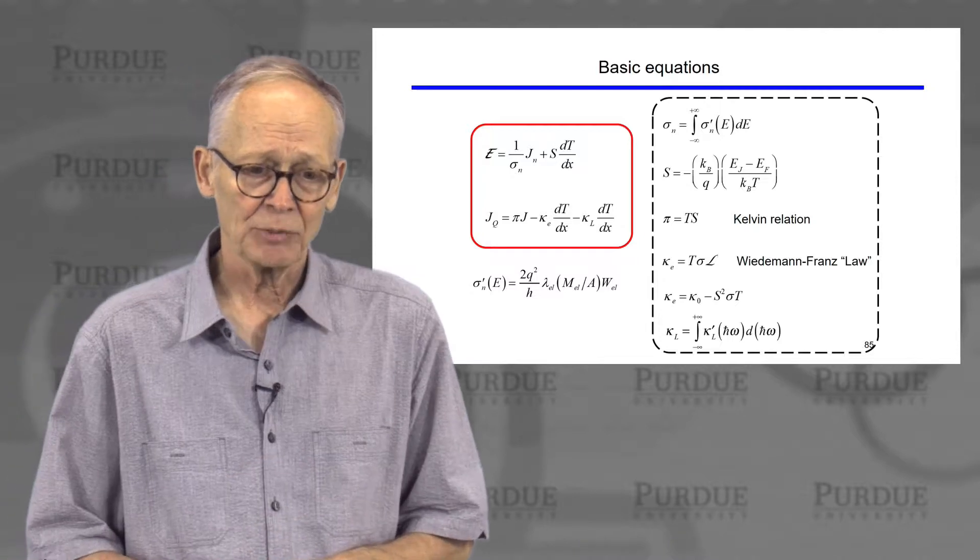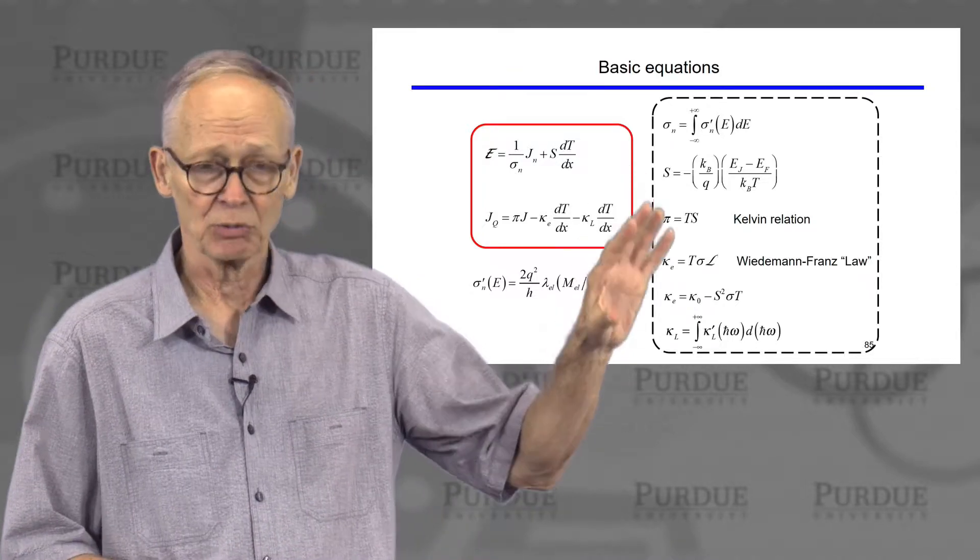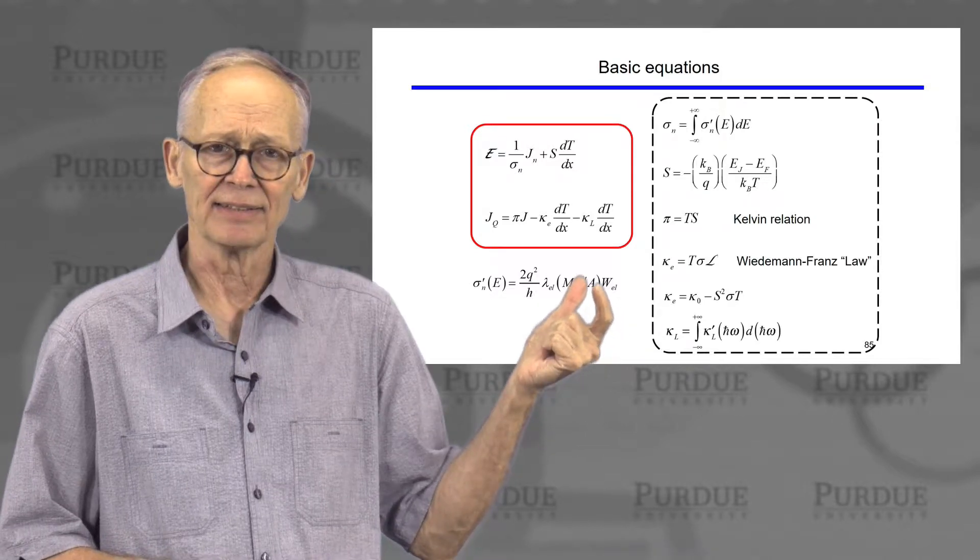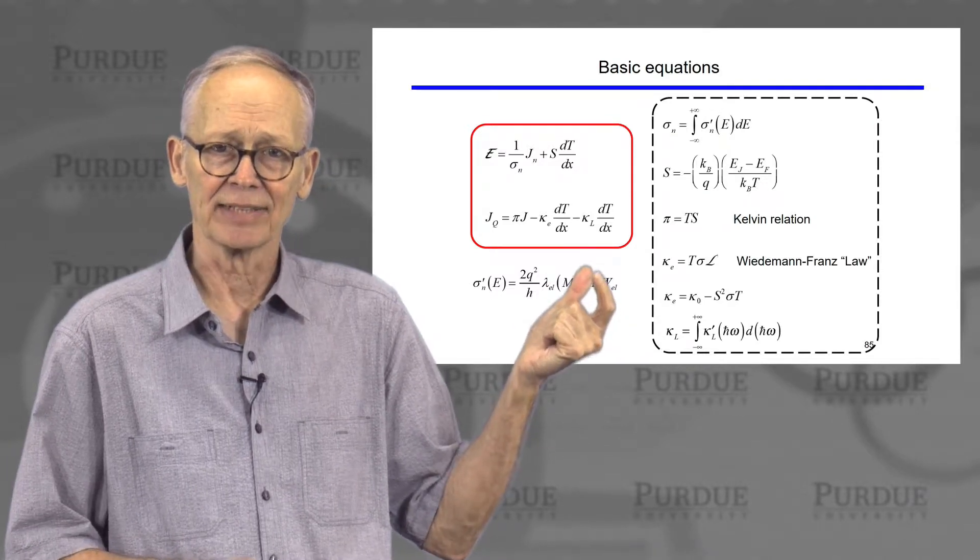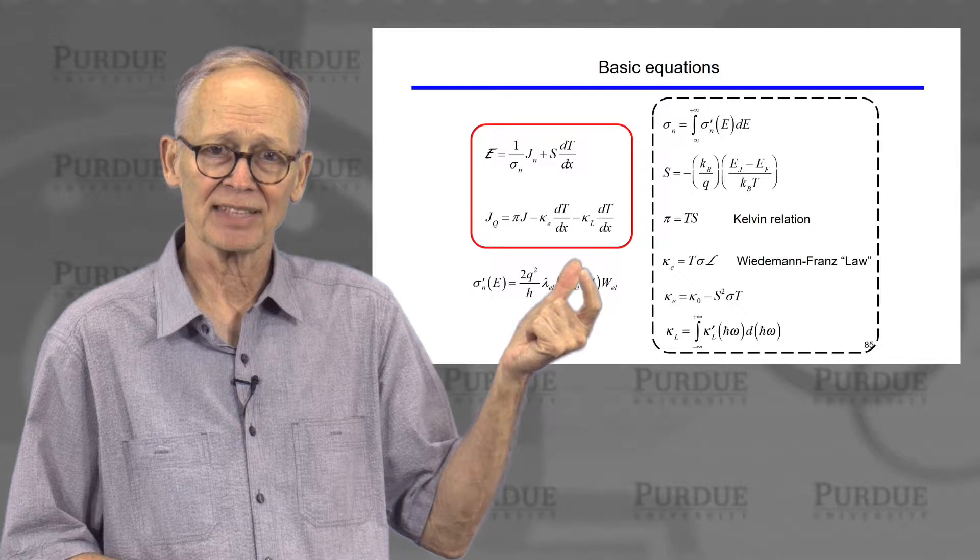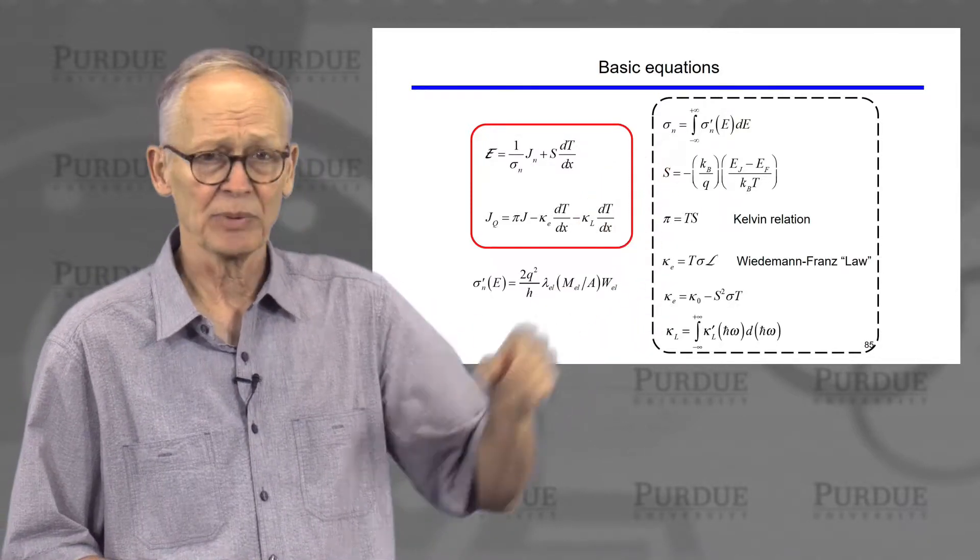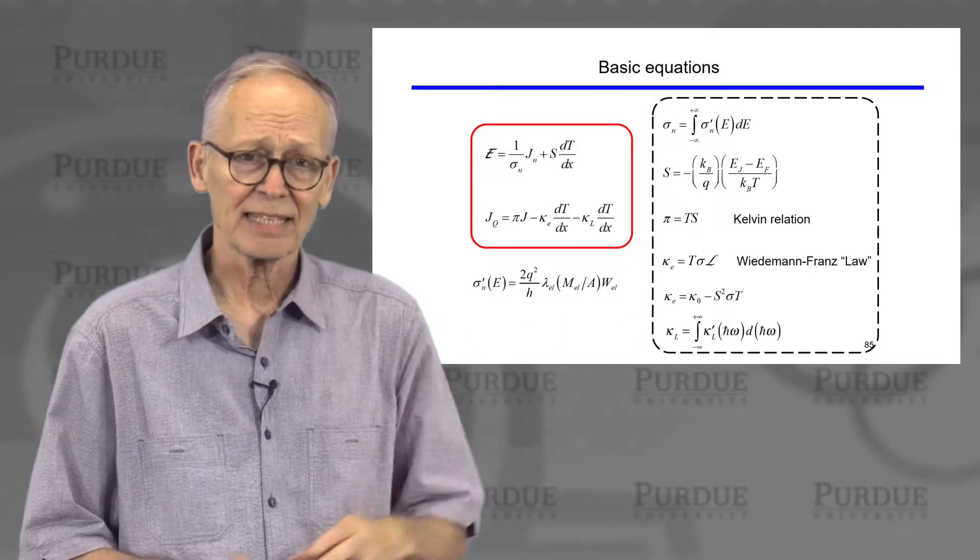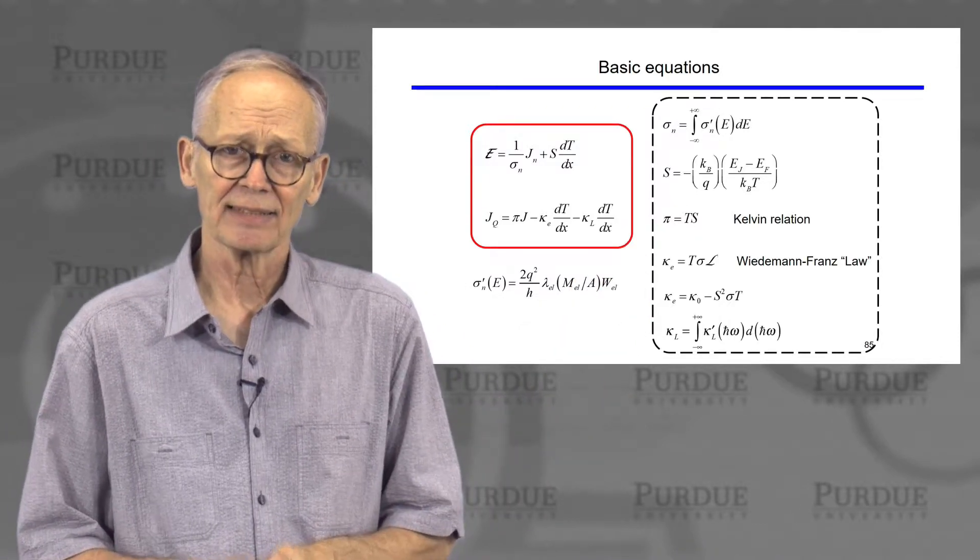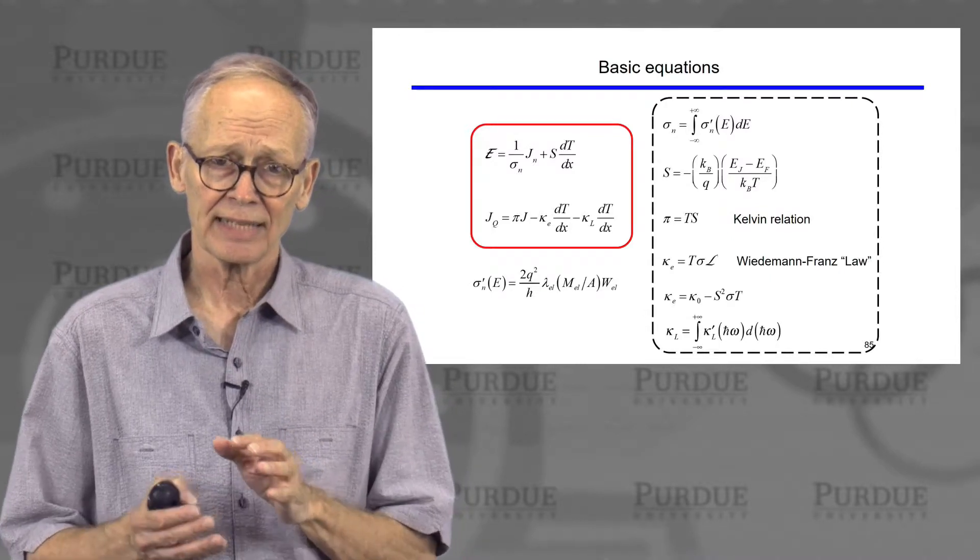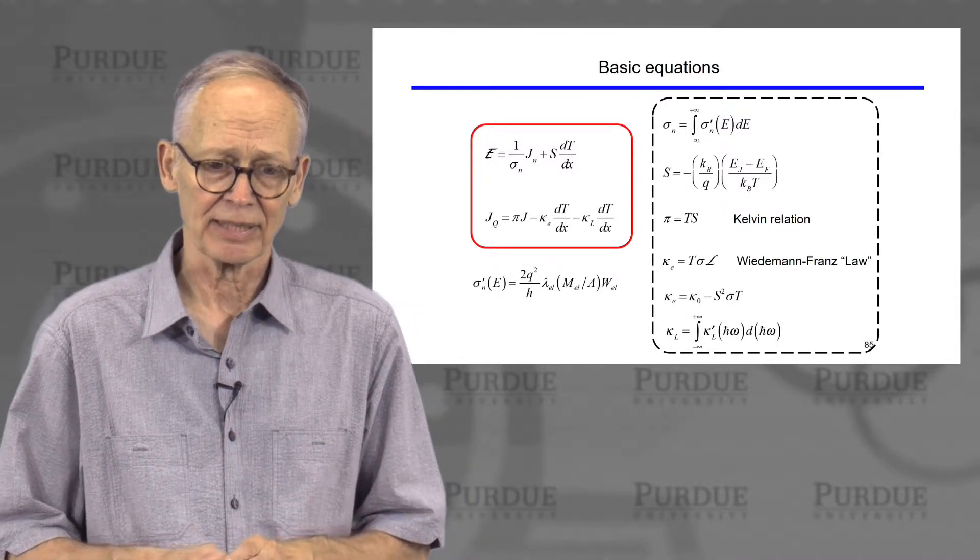We wrote down those equations. For the electrical part, everything depended on the differential conductivity, which was really a measure of the conductivity of each energy channel. To get the total conductivity, we added all of those up. We saw that the Seebeck coefficient was simply related to the difference between the average energy at which current flows and the Fermi level of the semiconductor.